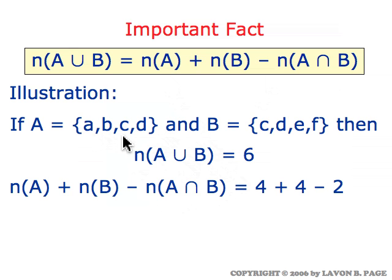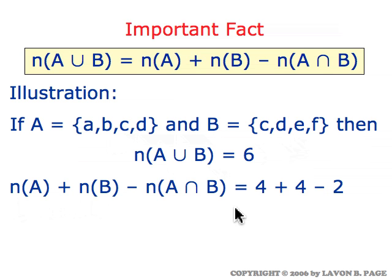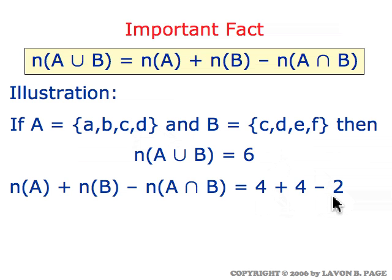To illustrate: if A contains these four elements and B these four elements, then the union of A and B has the six elements A, B, C, D, E, and F, so the number of elements in the union is six. Six equals the number of elements in A — which is four — plus the number of elements of B — which is also four — minus the number of elements in the intersection, which is two, since the intersection consists just of elements C and D. So four plus four minus two gives six, subtracting off the number in the overlap of the two sets.